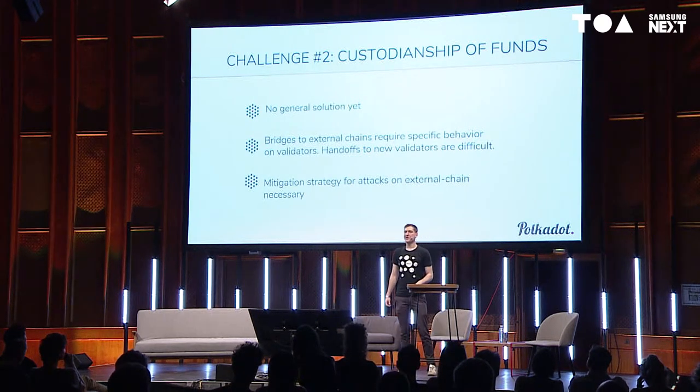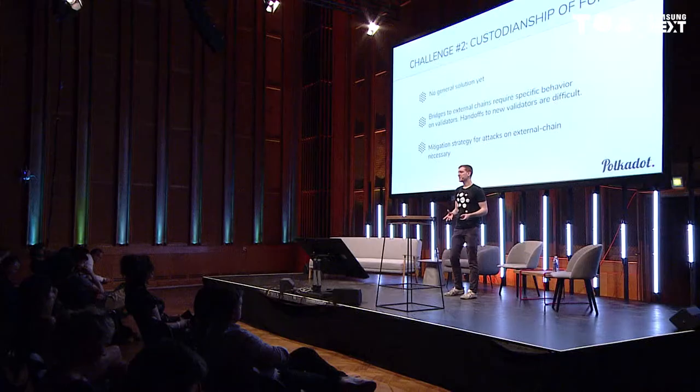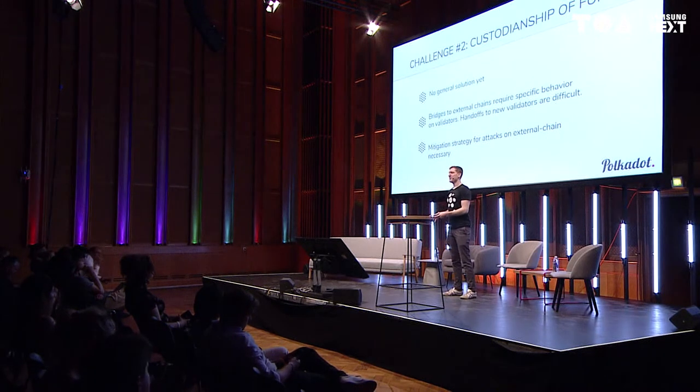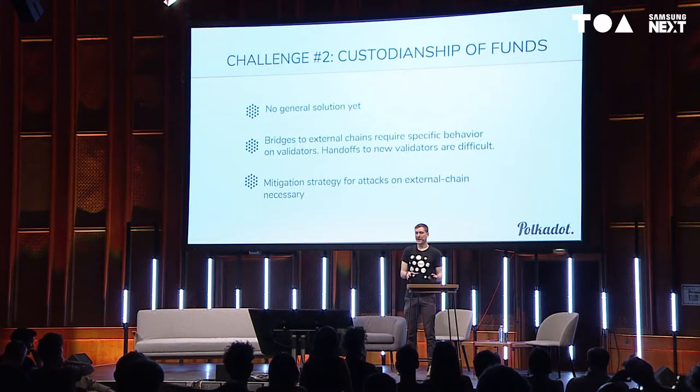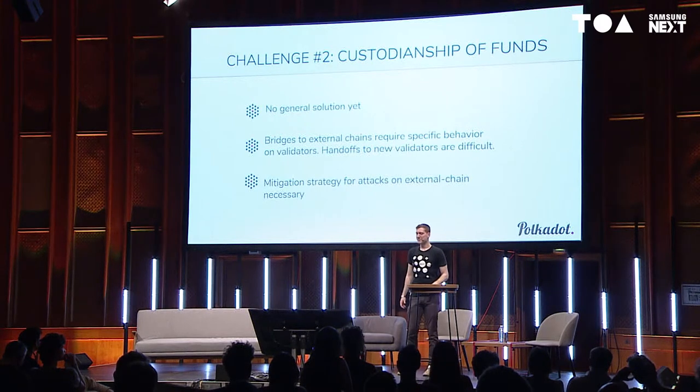Another major challenge is custodianship of funds on an external chain — there isn't really a general solution yet, partly due to the reversion problem outlined before. These bridges require very specific behavior from relay chain validators, and handoffs to new validators are difficult. For example, if validators are managing a multi-signature wallet on some external chain, when there's a new validator set they need to hand over custody of that multi-sig wallet, which may be a complex process. We need mitigation strategies, possibly special economic incentives or cryptographic techniques that prevent betrayal by having betrayers betray each other.